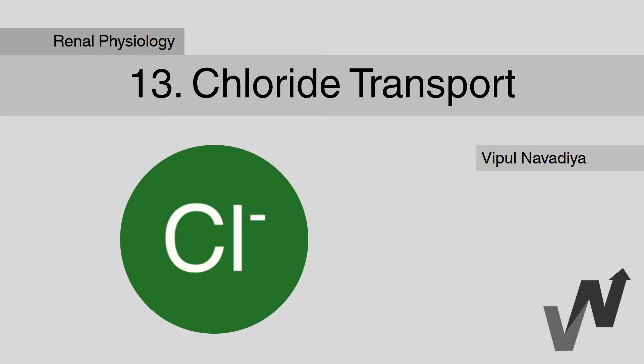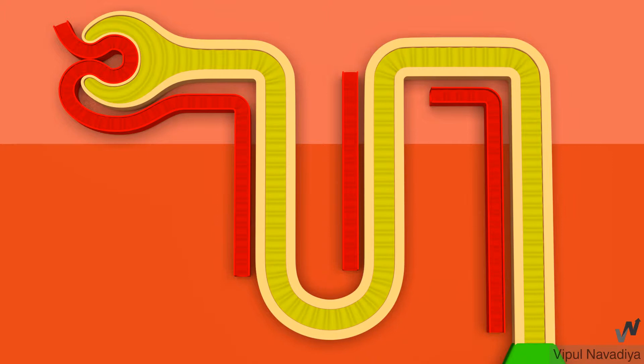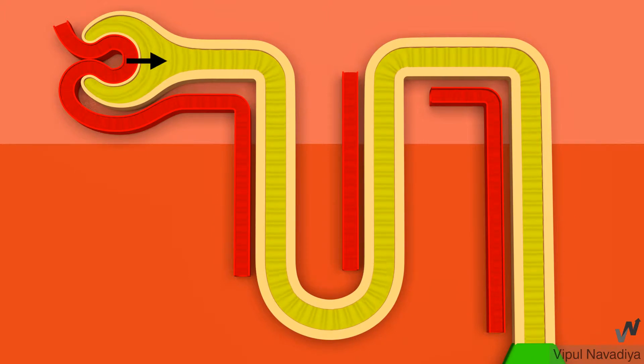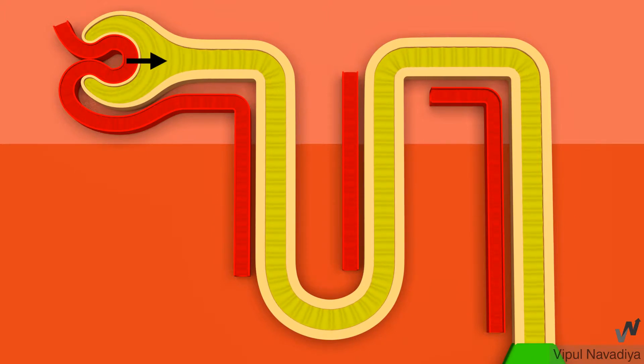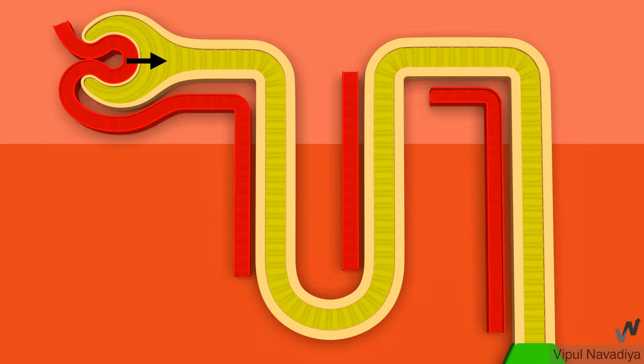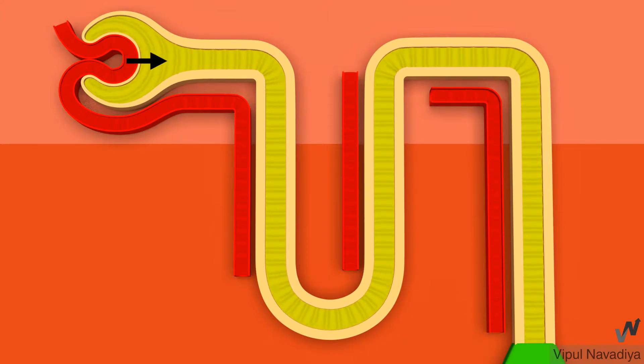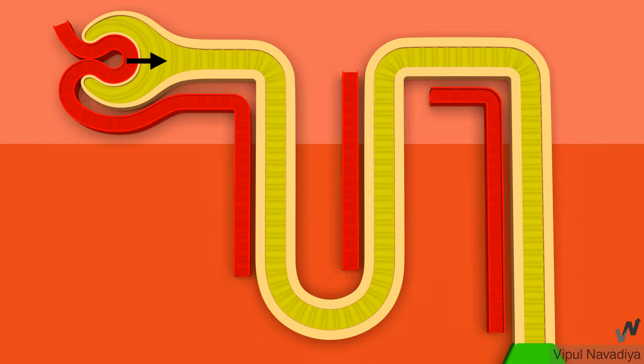Welcome to the renal physiology series. We are studying tubular processing and in this video we will see the transport of chloride. Chloride is filtered freely at the glomerulus and its reabsorption is almost parallel to sodium reabsorption.